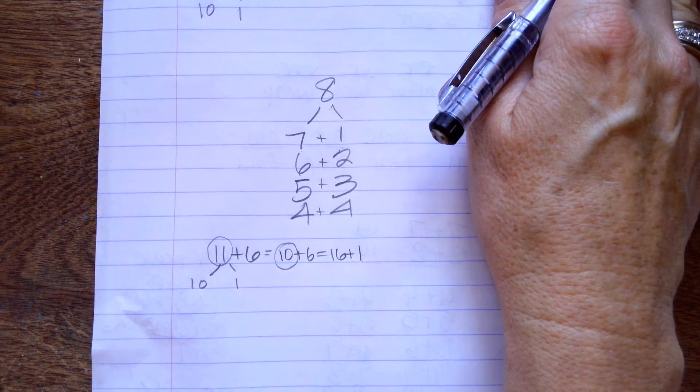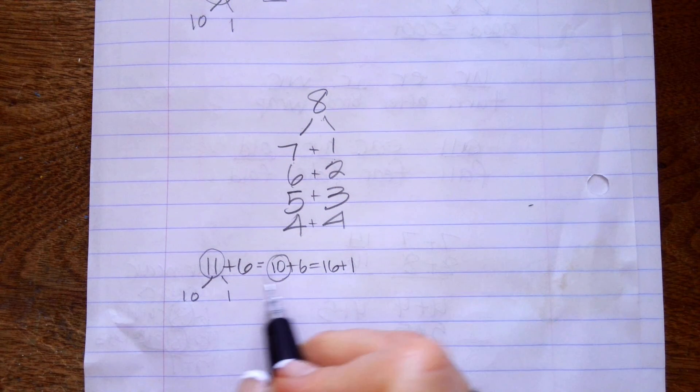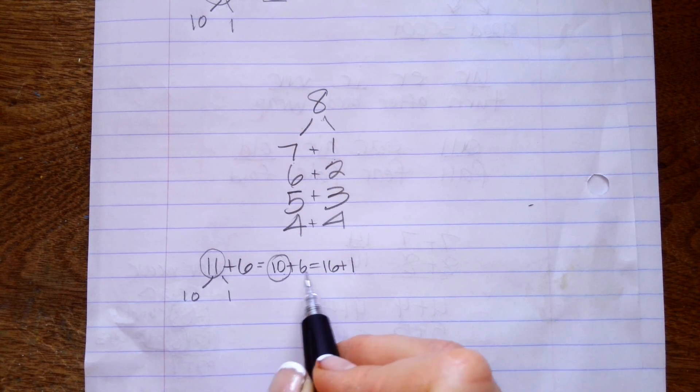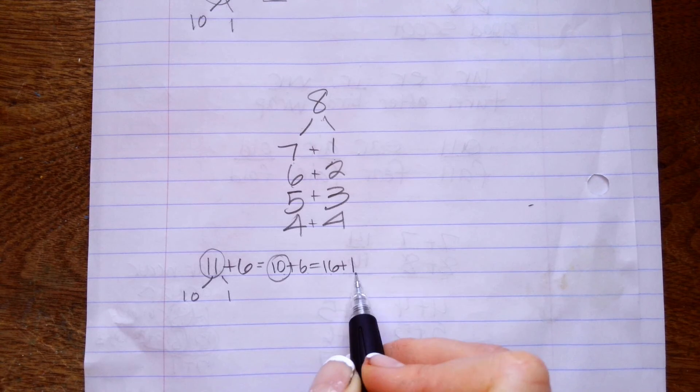And, I put this 10 here and then I put this 1 here. It's okay if it doesn't make sense to you, honey. It will. So, what I'm going to say when I figure this out is, 10 plus 6 is 16 plus 1 is 17.